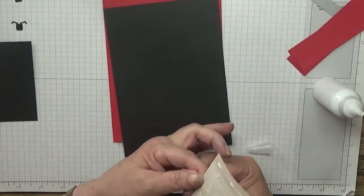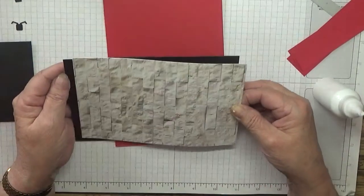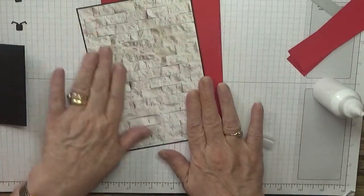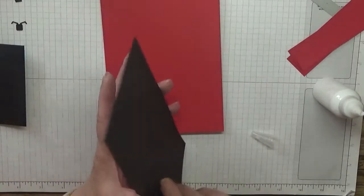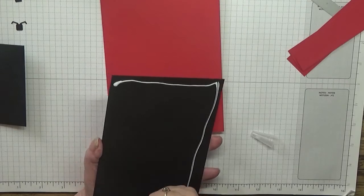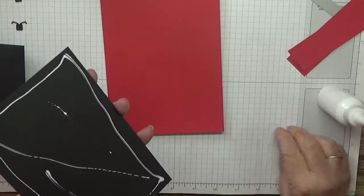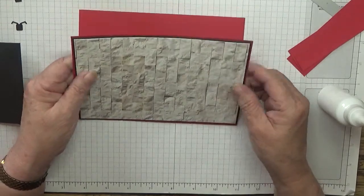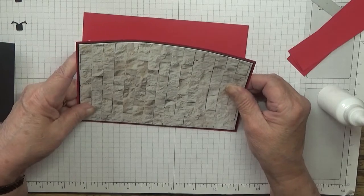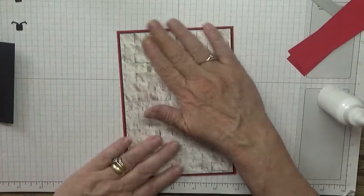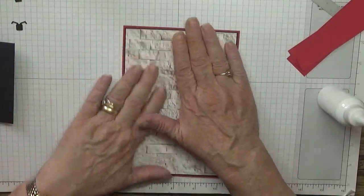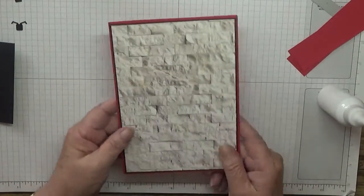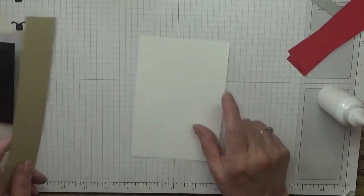I'll put this on the base of the card. I don't have a piece of white cut for the inside yet, but I will add that. We'll put that to one side and get on with our stamping.